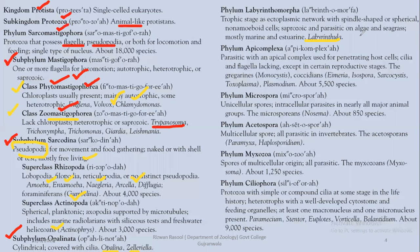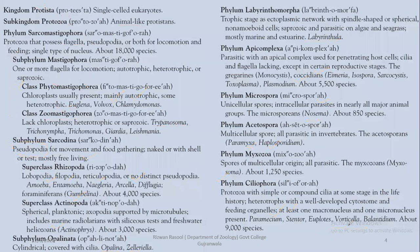Labyrinthiomorpha includes Labyrinthula, which lives on seagrass or algae in a parasitic way. In Phylum Apicomplexa, examples include Plasmodium and Coccidians. Microspora includes obligate intracellular parasites such as Nosema. In Phylum Acetospora, Paramyxea and Haplosporidium are discussed. In Myxozoa, Myxosoma cerebralis is discussed — these are parasites. In Ciliophora, many examples related to Paramecium will be discussed.